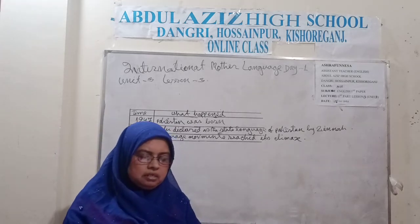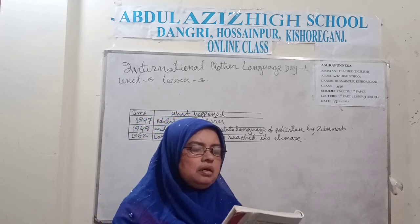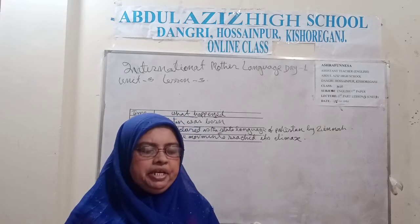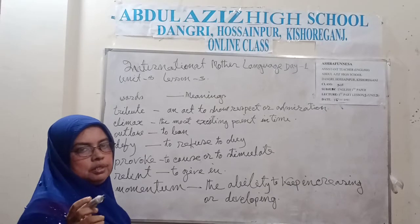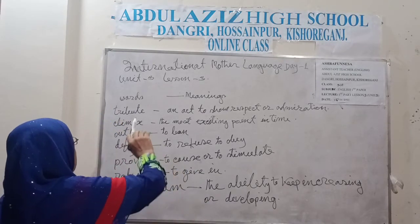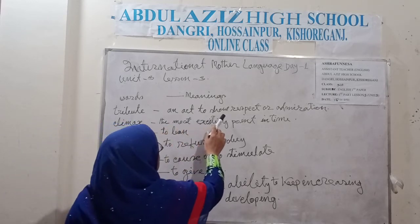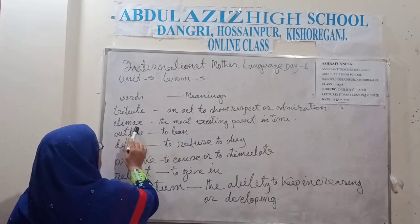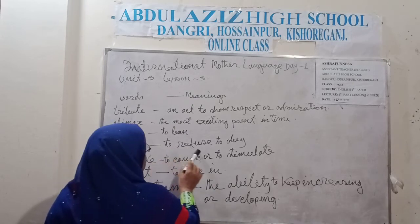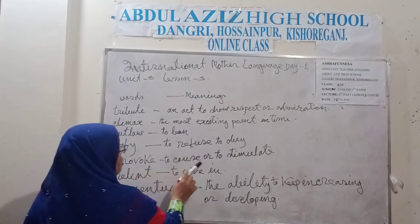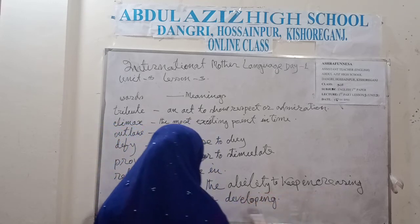Then see what is there — match the words with their meaning. Here students, look at the bold words and their meanings. Tribute: an act to show respect or admiration. Climax: the most exciting point in time. Outlaw: to ban. Defy: to refuse to obey. Kindle: to cause or to stimulate. Relent: to give in. Momentum: the ability to keep increasing or developing.